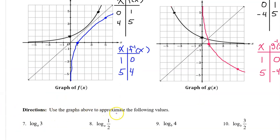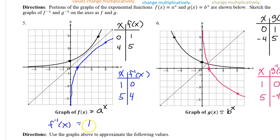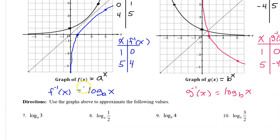Use the graphs above to approximate the following values. Since f of x equals a to the x power and g of x equals b to the x power, f inverse is log base a of x and g inverse equals log base b of x. For number 7, use the graph of log base a of x: go to an input value of 3 and look for the output value. This seems to be about 2.3 approximately.